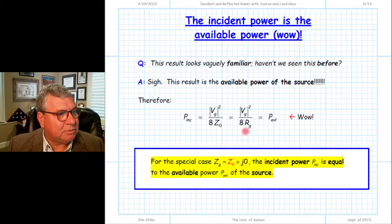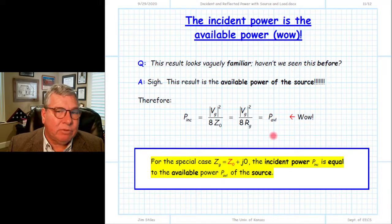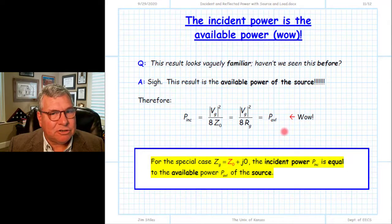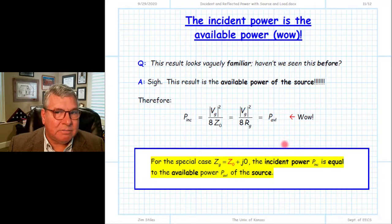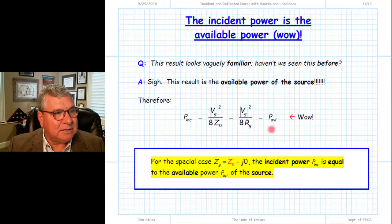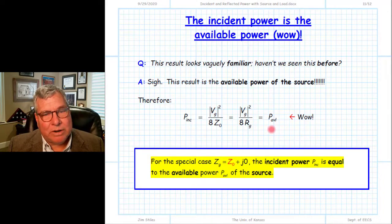This result should be immediately recognizable as the available power of the source. So we have an important result: if we have a matched source — a source whose impedance ZG is numerically equal to Z0 — the incident power depends only on the matched source itself. More specifically, the incident power equals the available power of that matched source. We know the incident power instantly without needing to know anything about the load impedance terminating the line.